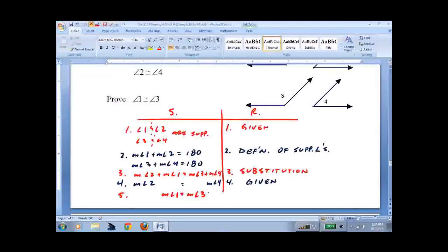Remember, measure of angle 1 equals measure of angle 3 is equivalent - the exact same thing as angle 1 is congruent to angle 3. And that would be subtraction.